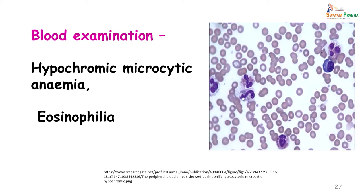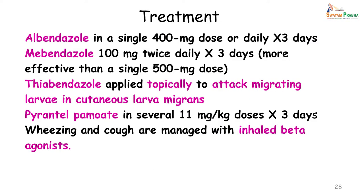A smear examination of the blood would reveal hypochromic microcytic anemia together with eosinophilia. Treatment of hookworm infestations is done with albendazole as a single dose or daily for 3 days. Mebendazole 100 mg twice daily for 3 days is also used; mebendazole given for 3 days is found to be more effective than a single dose.